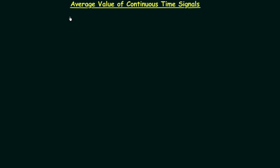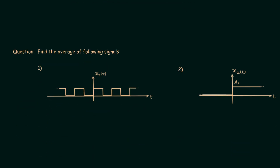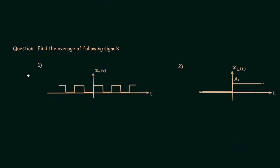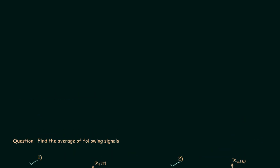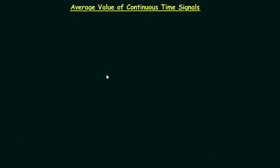In this lecture we will see how to calculate the average value of continuous time signals, and once we are done with the explanation part we will solve two questions based on it. In the last lecture we saw how to calculate the area of continuous time signals, and we will use it in this lecture also.